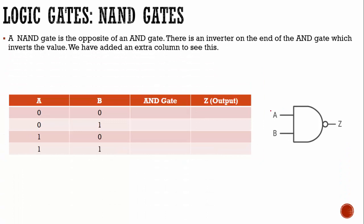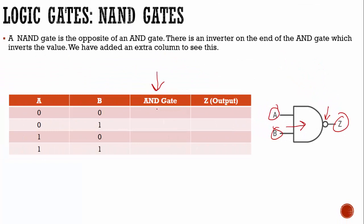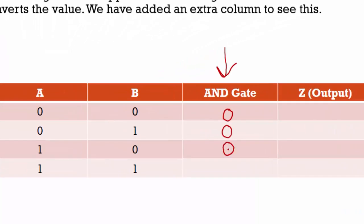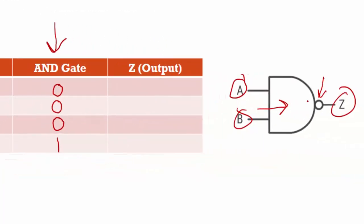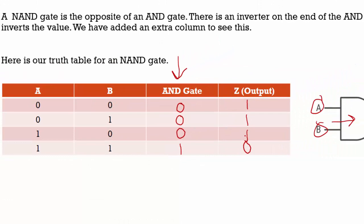Now we have a NAND gate. A NAND gate is the opposite of an AND gate — there is an inverter on the end of the AND gate which inverts the value. I've added an extra column so you can see this. Looking at our truth table: with an AND gate, both A and B have to be true. When A and B are not both true, the AND result is zero — and those zeros get inverted to ones by the inverter. When A and B are both on, that results in a one through the AND gate, but then that one gets inverted to a zero. So the NAND gate outputs a one in all cases except when both A and B are on.